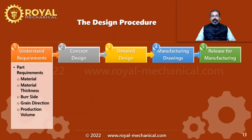Step 1 is to understand the requirements. In the context of press tool, we need to understand the part requirements — part requirements like the material, the material thickness, the burr side, the grain direction, and the production volume.